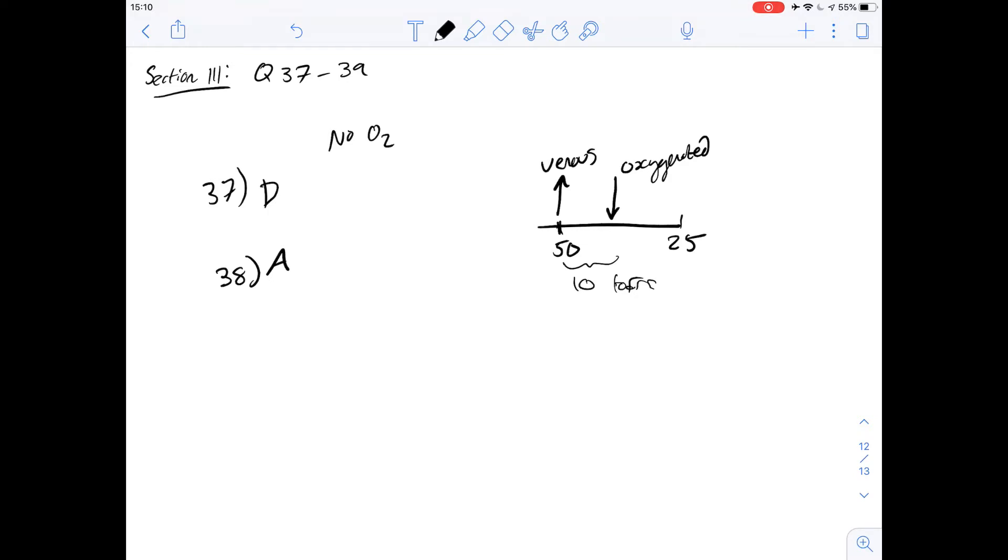For number 39, it says, considering the system described, which one of the following is possible for the normally functioning embryo at a point in the, and then it gives a few of the different options there. So let's go through them bit by bit. And this one's a little bit more involved, but let's have a look at A.